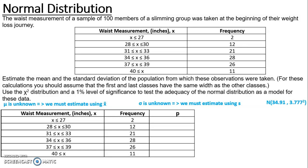I am then going to input that data into my calculator to get the values of p. Unlike many questions we have done before, we are going to need to use the continuity correction. Our first group is anything less than or equal to 27, and the next group is 28 up to and including 30. Any value between 27 and 28 will have to be rounded down or up into the appropriate category. So for the upper bound of the first group I need the maximum value that can be rounded down to 27.